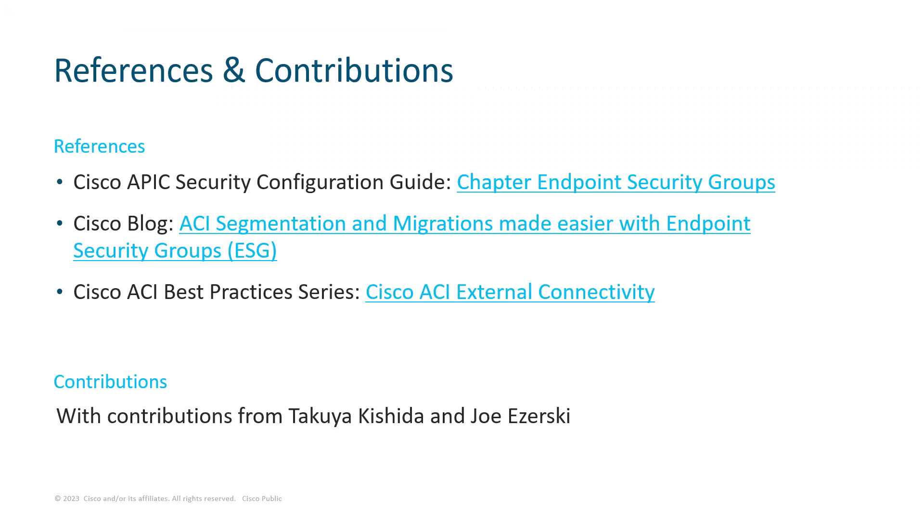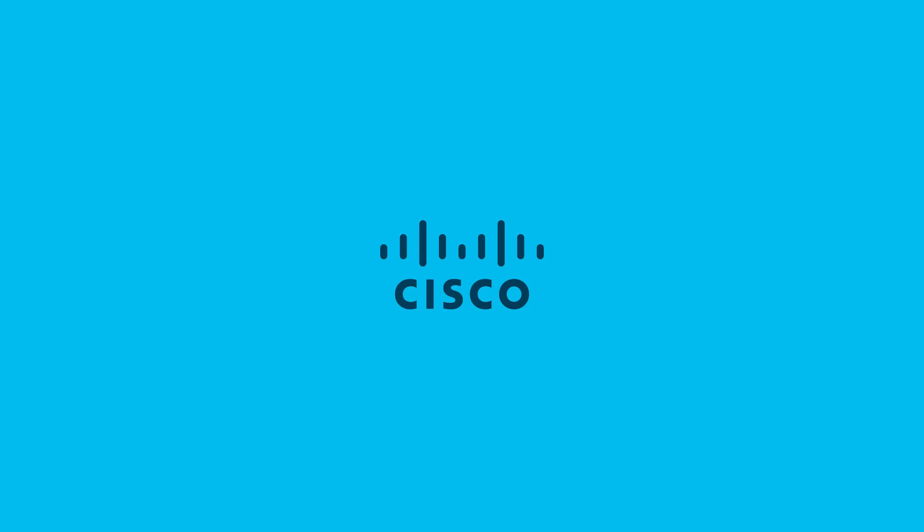That's everything I wanted to share in this part two video and the entire introductory series to ESGs. I recommend checking out the ESG chapter in the APIC security configuration guide for more detailed information. I also recommend my Cisco blog on ESG for fundamentals, and if you have any doubts around the shared L3Out concept or external EPG flags, check out the Cisco ACI best practices series, specifically the Cisco ACI external connectivity module. I hope this has been informative. Thank you for watching. Cheers.